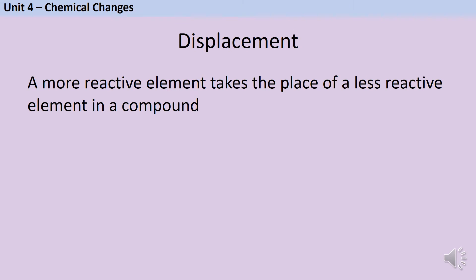A displacement reaction is a chemical reaction in which a more reactive element takes the place of a less reactive element in a compound. In this video we're mainly going to look at metals displacing metals, but this could also be a metal displacing hydrogen when it reacts with an acid, or something like a more reactive halogen displacing a less reactive halogen.